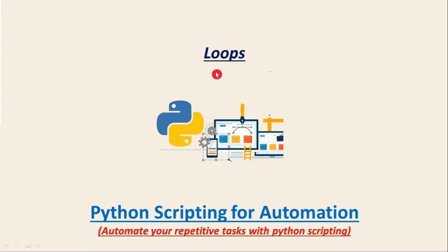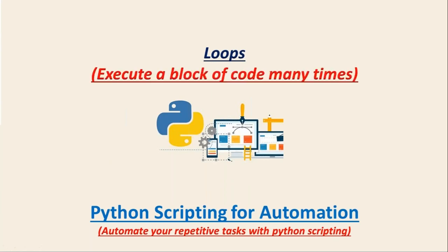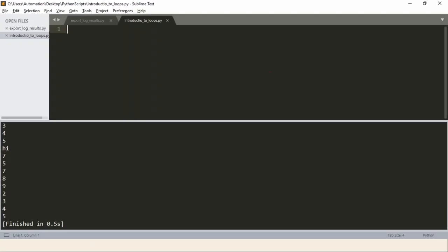Friends, here we are going to discuss about loops. First of all, loops are useful to repeat — to execute a block of code many times. Why do we need to execute a block of code many times? A block of code is nothing but maybe a single line or multiple lines. Why do we need to execute it again and again? Let me explain this with a simple example.